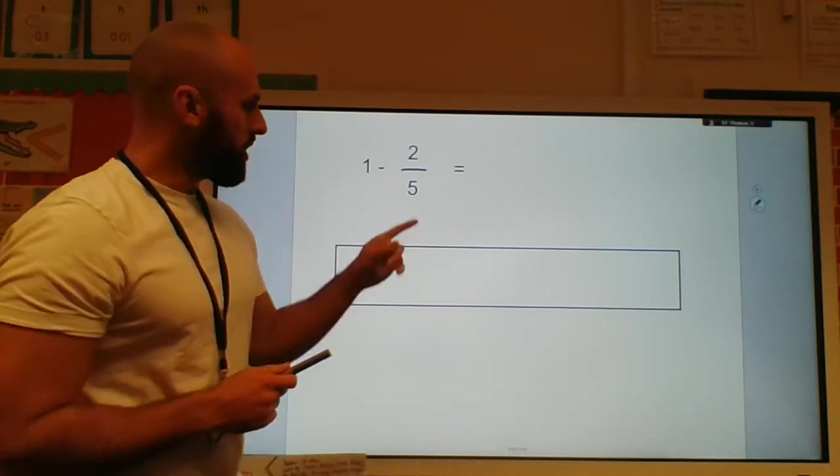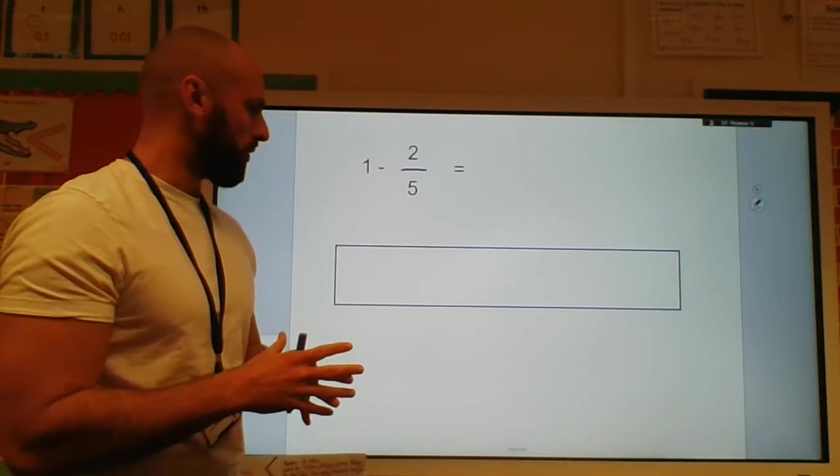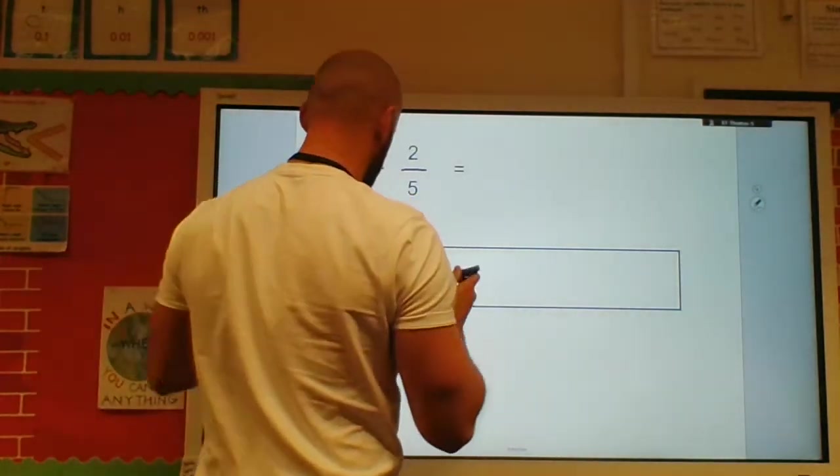So I've got this bar model to show one whole. Well remember the denominator tells us how many parts there are to the whole. So there must be five parts.